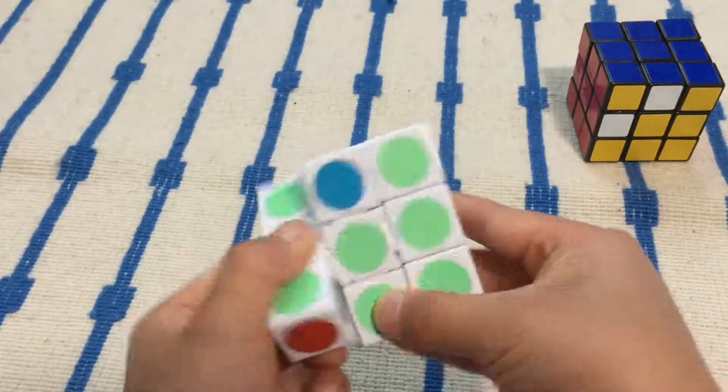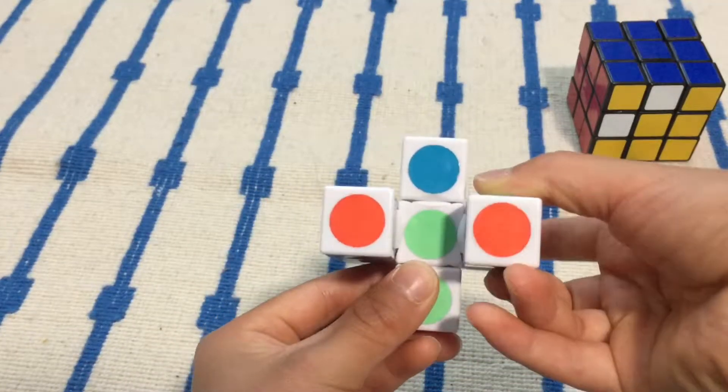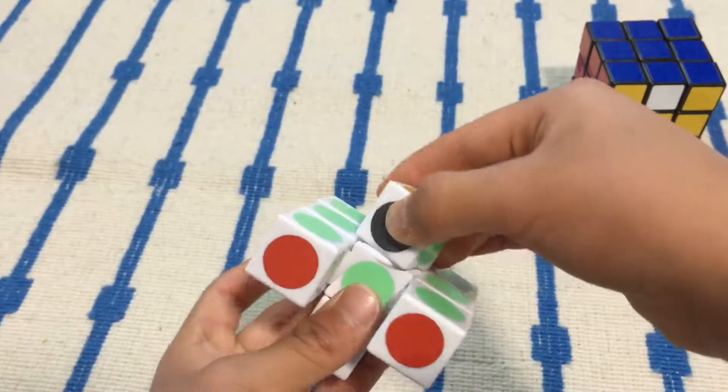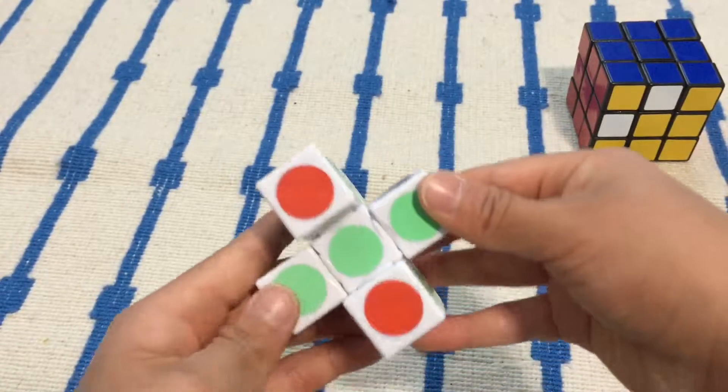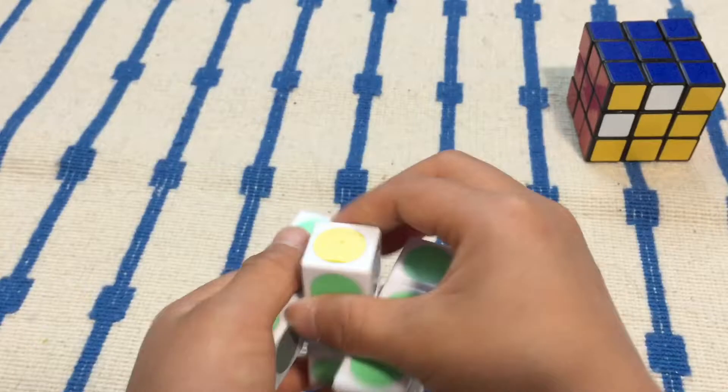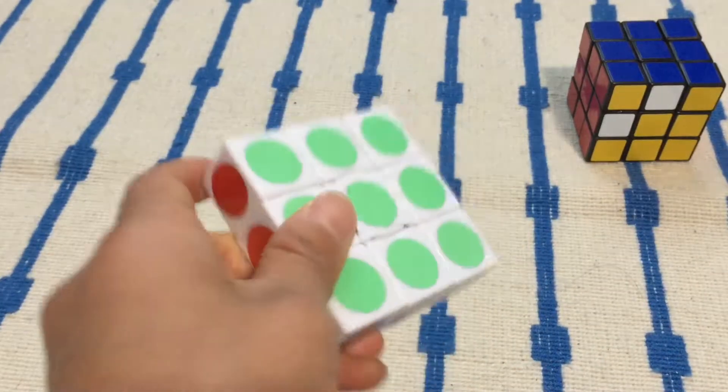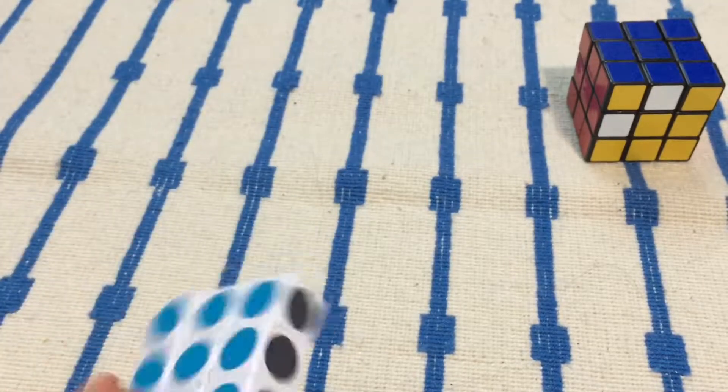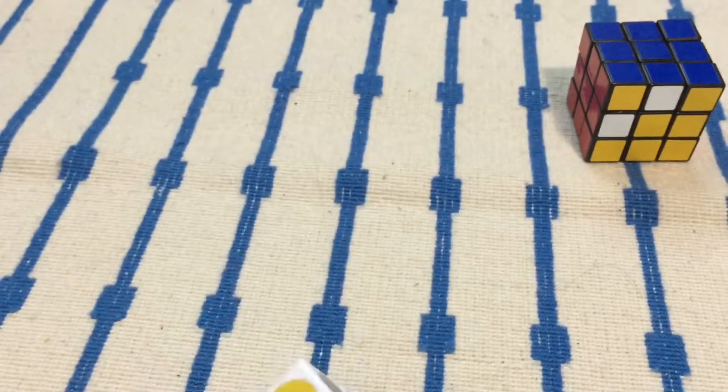So how you do this is you move it like this and this. Turn this as many times as possible - you need to match it up with the middle - and then turn it back. And as you can see, that solves your super floppy cube.